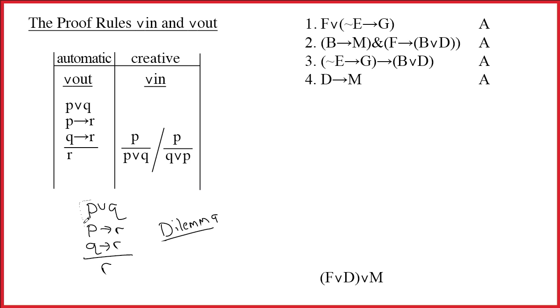In fact, probably the best way to think about this rule is that it's really a combination of two arrow outs. If you have p arrow r and you have p, you would get r. Or if you have q arrow r and q, then you would get r. So q arrow r and q, or p arrow r and p, and either way you're going to get r.